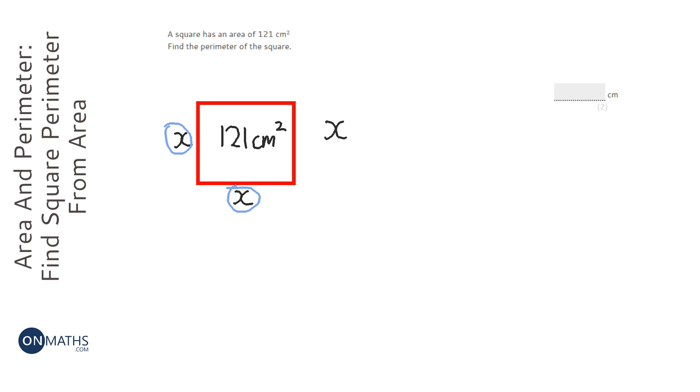So I know that x times x or x squared equals 121. And if I put my lines in, then I can square root both sides and so x is 11.